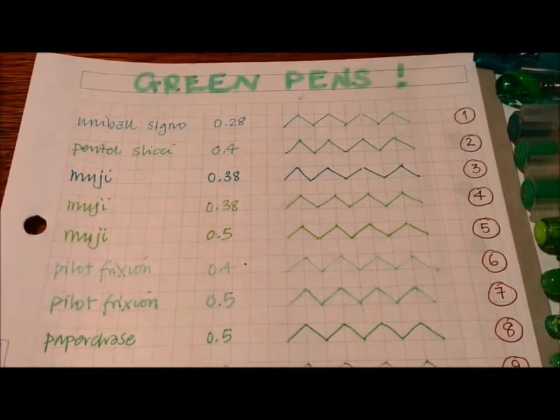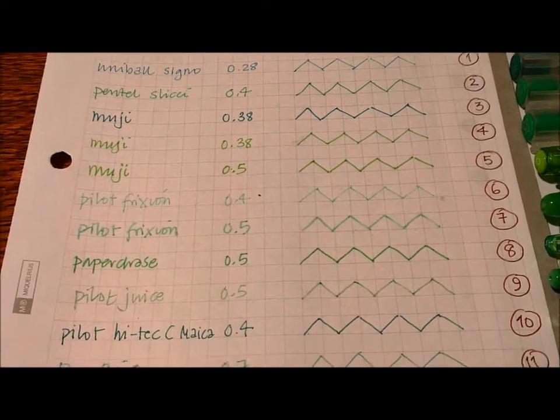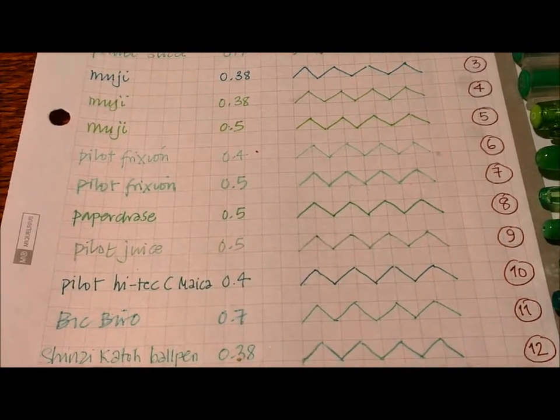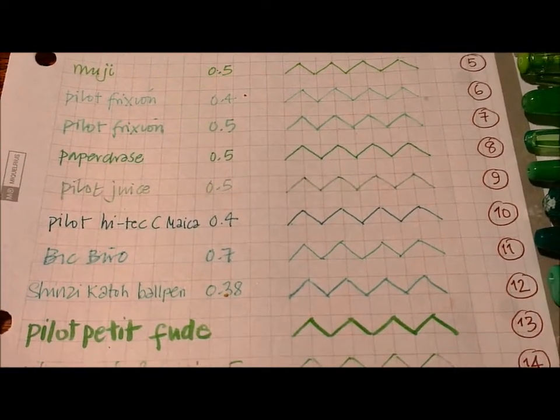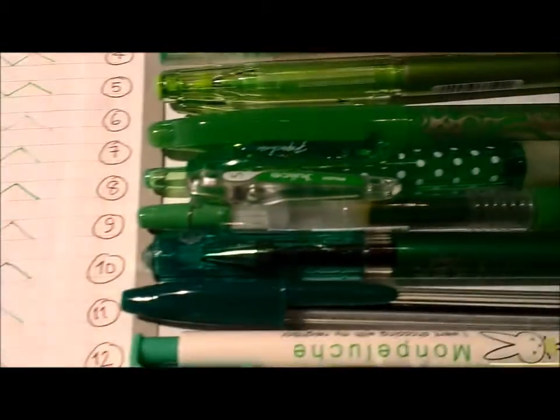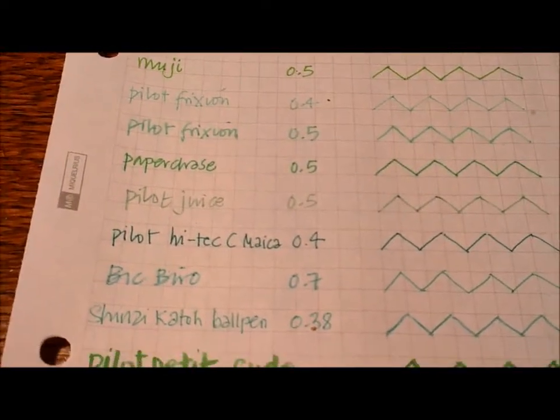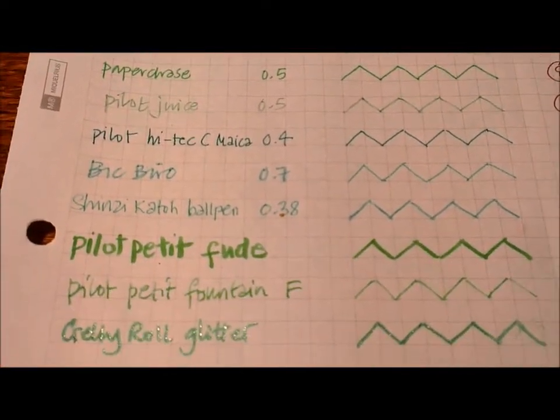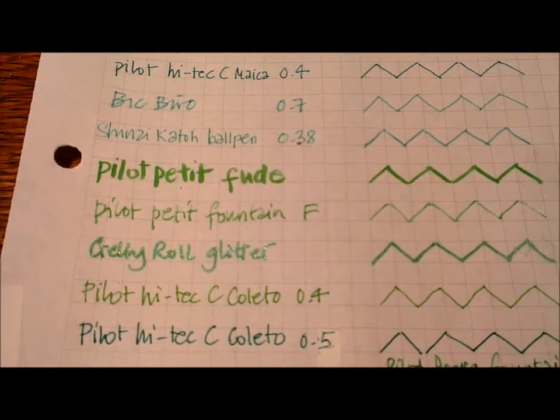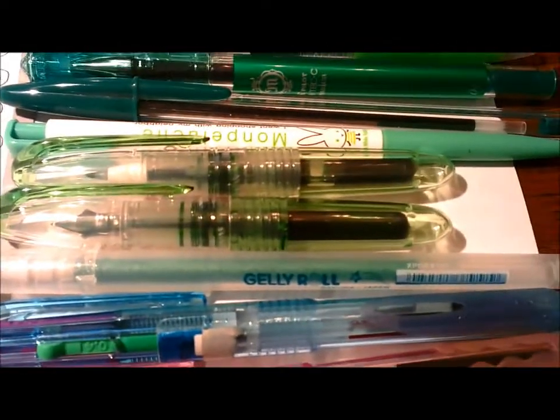They go from Uniball and Slickies, Muji pens, through Pilot Friction, the Paperchase gel pen which is the spotty one there, down through Pilot Juice and Hi-Tec Micas, normal biros and ballpoint pens, then the little Pilot Petit pens which I've already done a review of before.